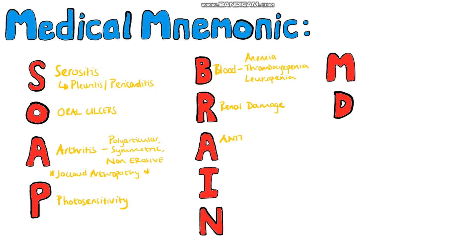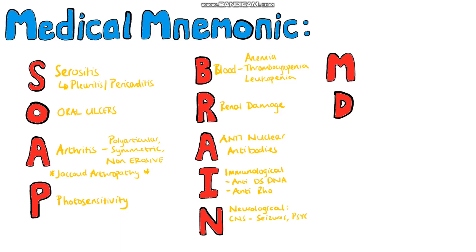A is for autoantibodies, specifically the anti-nuclear antibodies. I is for immunological, which includes the anti-double-stranded DNA antibodies and the anti-SSA or SSB antibodies. N refers to neurological, and this can include central nervous system problems such as psychiatric manifestations including anxiety and psychosis, as well as seizures. The peripheral nervous system can also be affected through peripheral neuropathies.